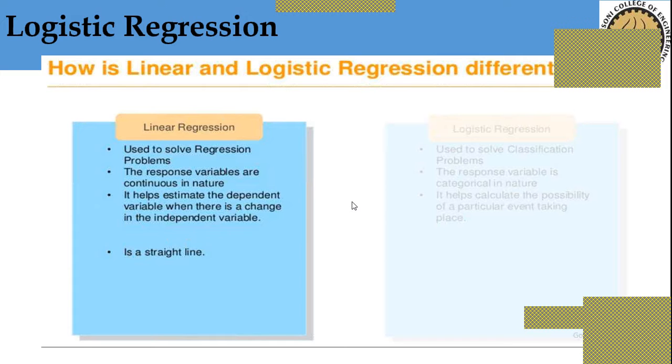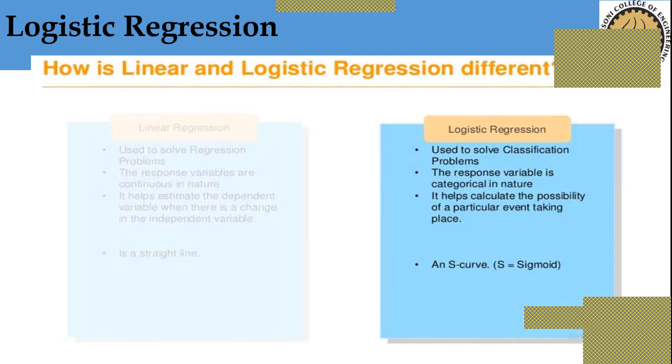So linear regression is always continuous in nature and it helps estimate the dependent variable when there is a change in the independent variable. It uses a straight line to represent linear regression.